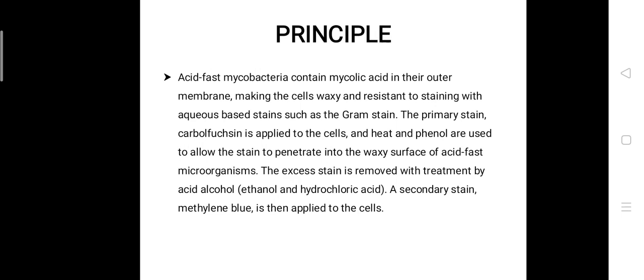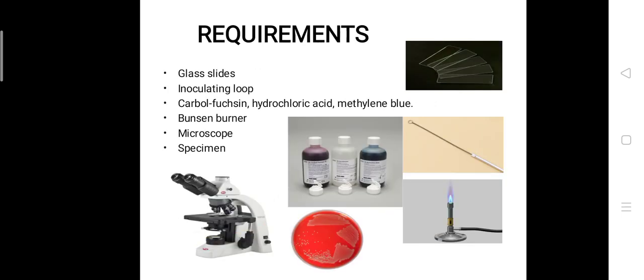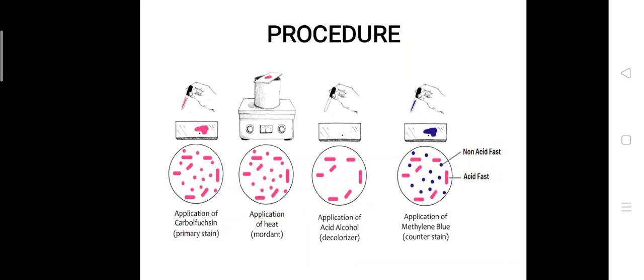In order to perform this acid fast staining, there are some requirements. You'll be needing the glass slide, the inoculating loop, carbolfuchsin, hydrochloric acid, methylene blue, the Bunsen burner, microscope, and specimen. For the specimen, you can use the growth from the culture plate or from the broth or from the sample directly.